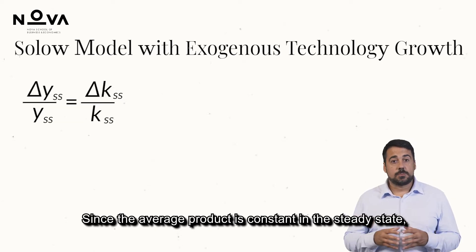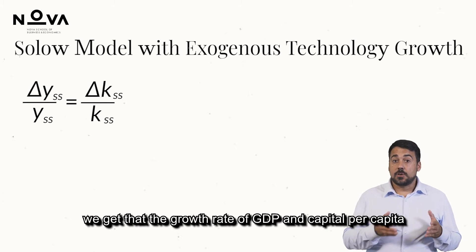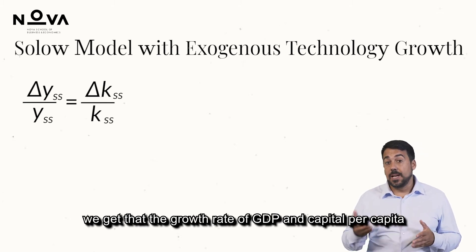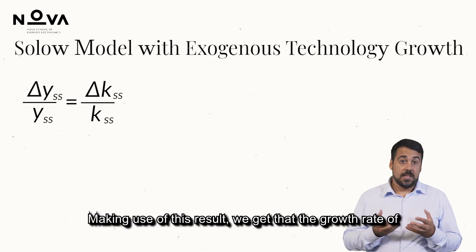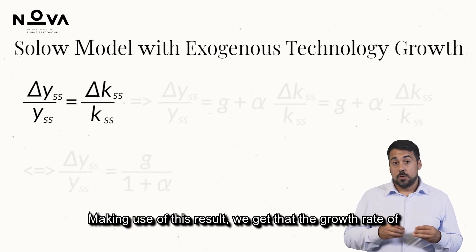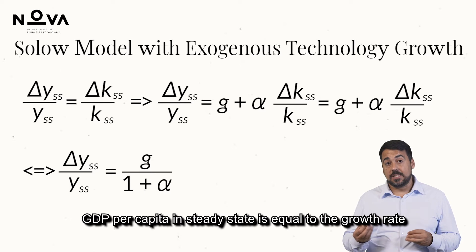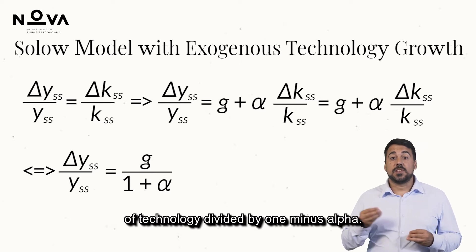Since the average product is constant in the steady state, we get that the growth rate of GDP and capital per capita must be the same. Making use of this result, we get that the growth rate of GDP per capita in steady state is equal to the growth rate of technology divided by 1 minus alpha.